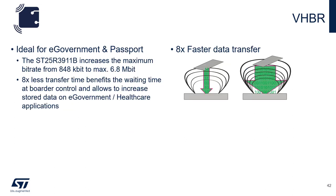An additional benefit of the 3911B is its support for very high bitrate, which is ideal for e-government and passports since these documents contain large amounts of data. The 3911B can handle data transfer of up to 6.8 megabits per second, which equates to an increase in speed of about 8 times over a standard reader.